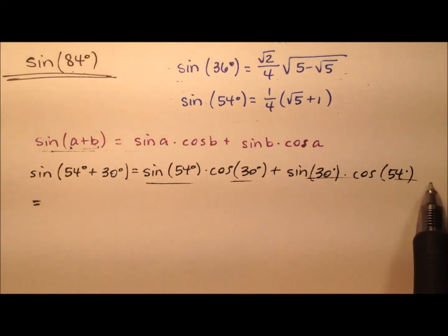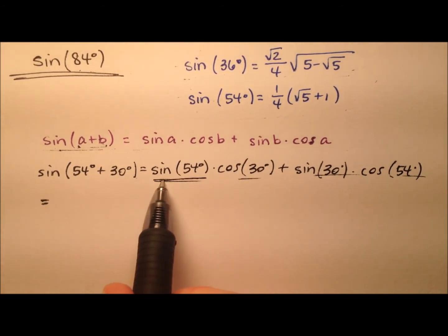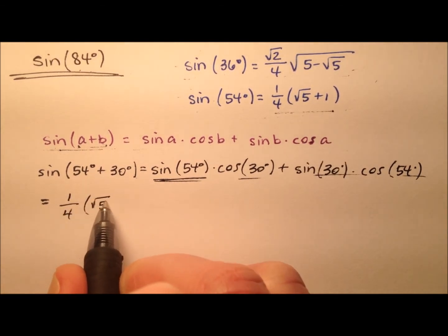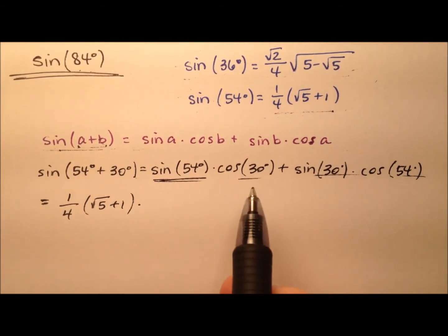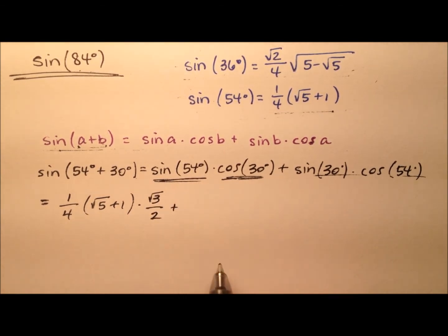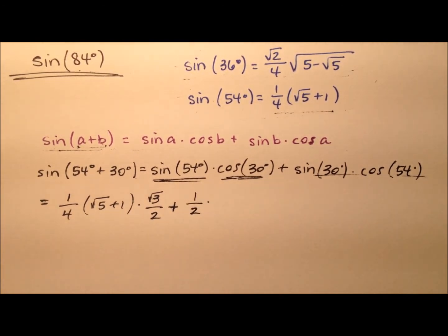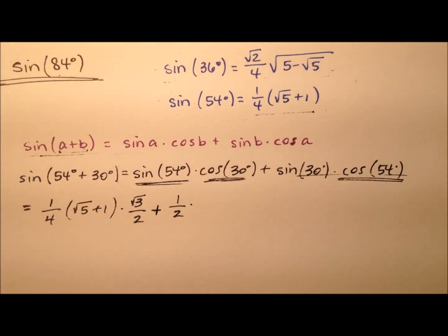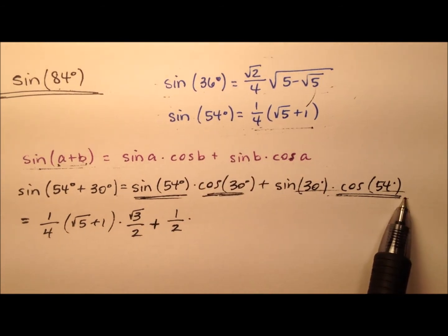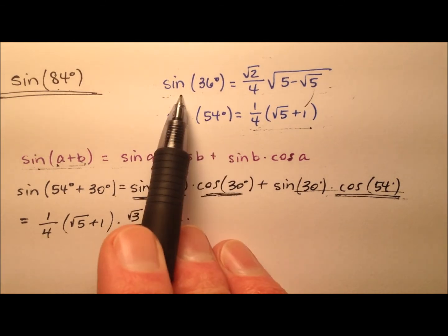Let's work these values and figure out the exact value for sine of 84. The sine of 54 degrees, we have right up here — that's going to be one-fourth times the square root of 5 plus 1. We multiply that by the cosine of 30 degrees, which is the square root of 3 over 2. Then we add the sine of 30 degrees, which is one-half, multiplied by the cosine of 54 degrees. We don't have that listed up here directly — it's the sine of 36 that was previously found.